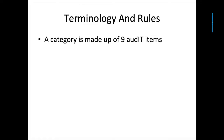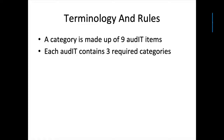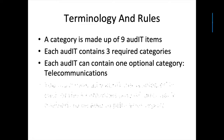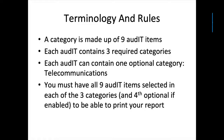A category is the highest level and it consists of nine audit items each. One category is made up of nine audit items. Each audit contains three required categories and can contain one optional category called telecommunications. You must have all nine audit items selected in each of the three required categories. If you enable the fourth optional category, you also need all nine audit items selected to print your report. The system will tell you if you're not done, but it won't let you print until you've completed that.